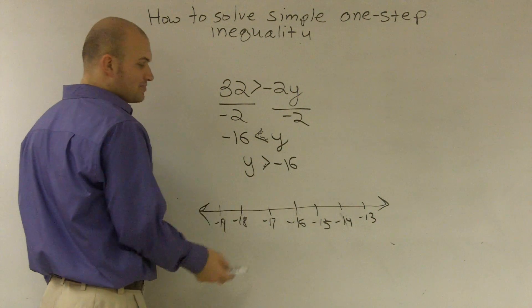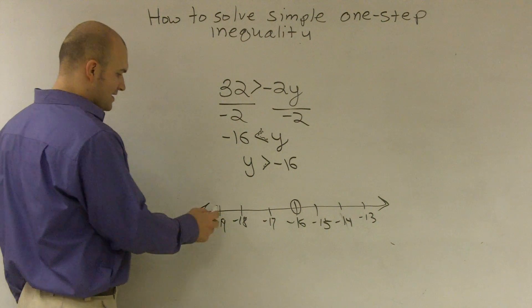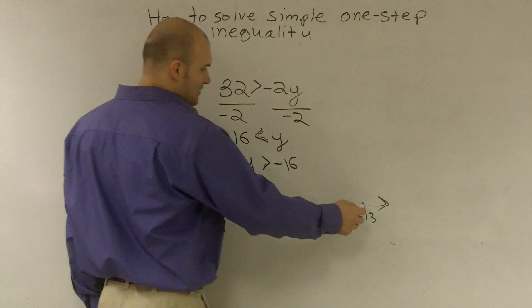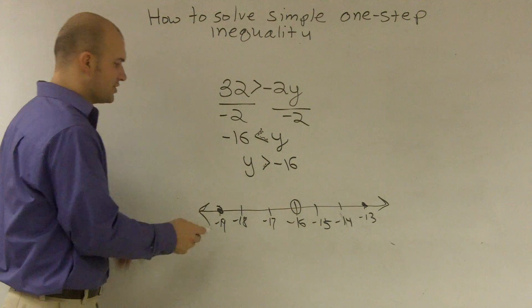Now what I need to do is I need to first plot my point, which is negative 16, and then I need to pick two points. I'll pick negative 19, and I'll pick negative 13. And simply all you're going to do is you're going to plug in these numbers into your equation.